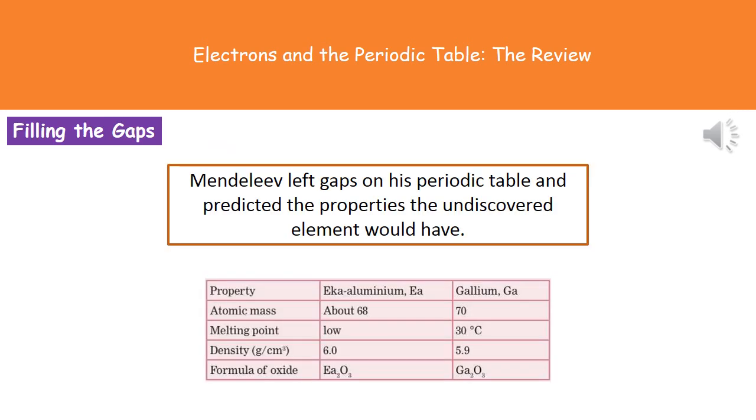So with Mendeleev's periodic table then he had these gaps because he thought there were elements that were undiscovered. But in those gaps he actually predicted the properties that they would have. So what he actually had on his periodic table was he had a gap where today we find gallium. And he called it eka-aluminum. And he predicted that the atomic mass would be about 68. It would have a low melting point. It would have a density of around about 6 grams per centimeter cubed. And it would have a formula when it's joined with oxygen of EA2O3.